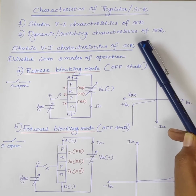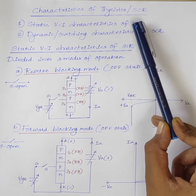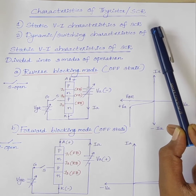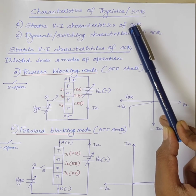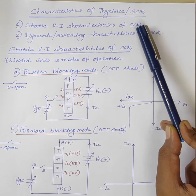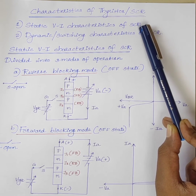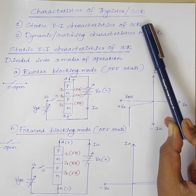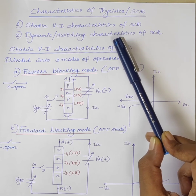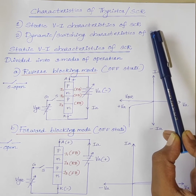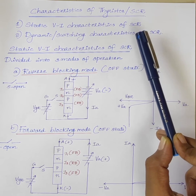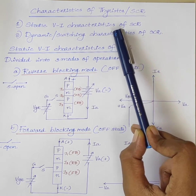Good morning students. Today we will discuss characteristics of thyristor or SCR, silicon controlled rectifier. Thyristor is a switch — it is a semi-controlled switch. Every switch has two characteristics: static characteristics and dynamic characteristics. Static characteristics means characteristics of a switch when it is in its on state or off state. Dynamic characteristics means characteristics of a switch when it changes from one static state to another. Today we will discuss static VI characteristics of SCR.